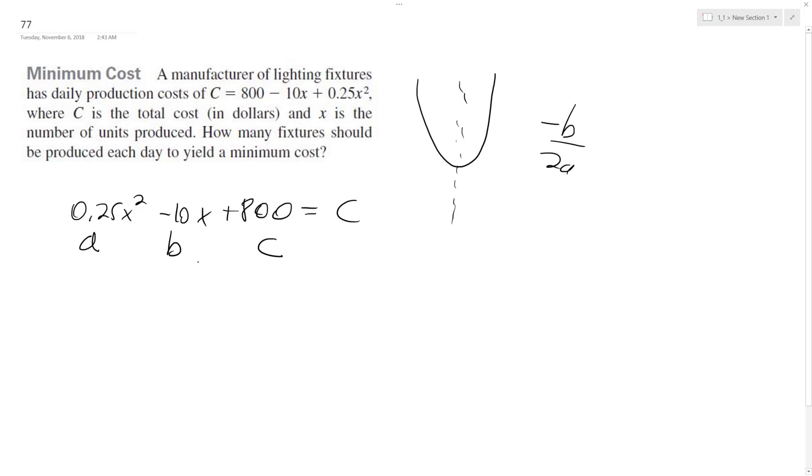So we get negative 10 over 2 times 0.25 and we get 10 over 0.5 which is equal to 20. That's what we should produce.